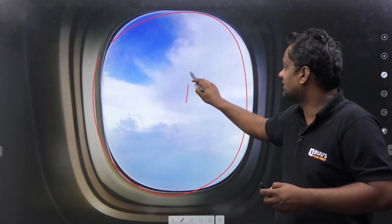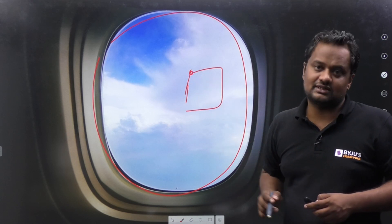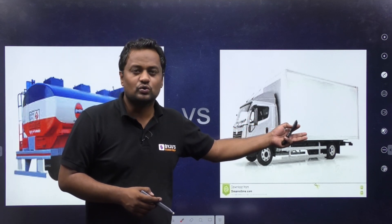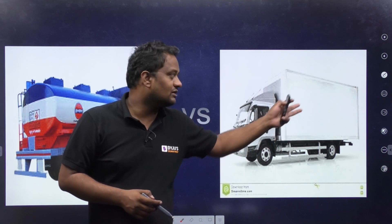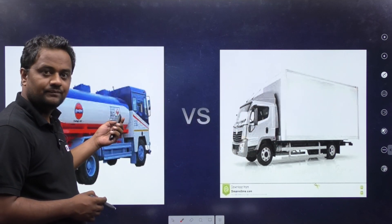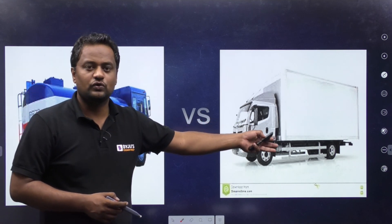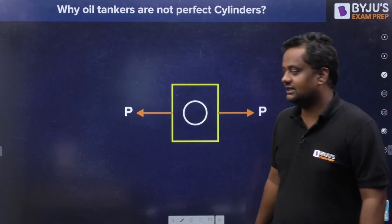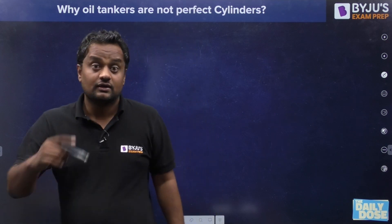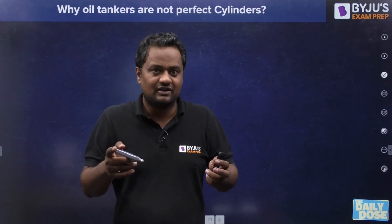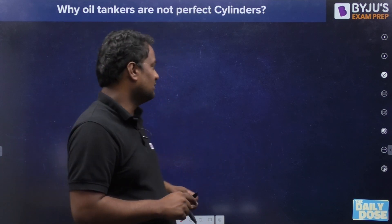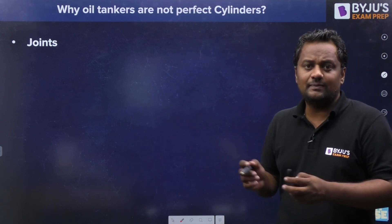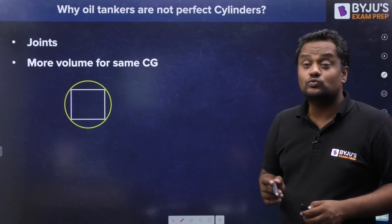Similarly in aeroplane windows, due to outside air pressure, if a rectangular window is used, the discontinuity causes stress concentration. For a normal cargo truck, there is no oil or fluid carried, so there isn't as much internal pressure. That is why with no fluid pressure, a rectangular shape can be used. Apart from stress concentration, there are other reasons — I'll cover why they are not exactly cylinders as well, so stay till the end.